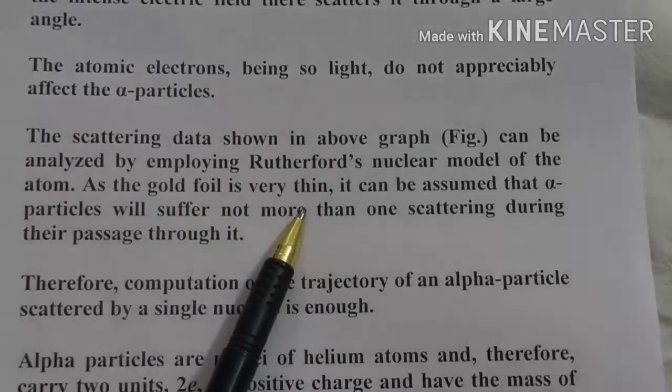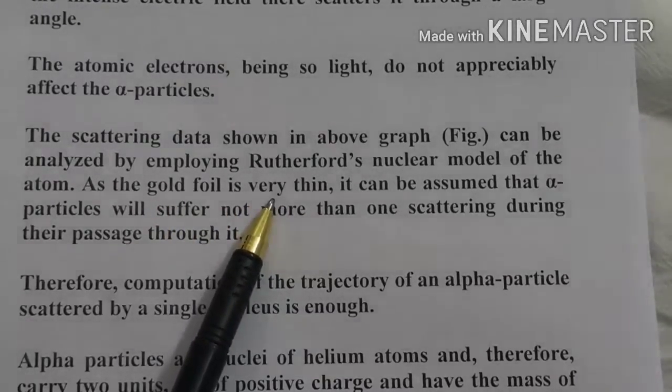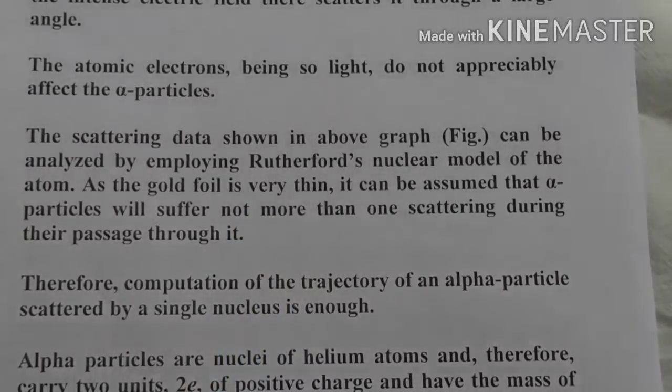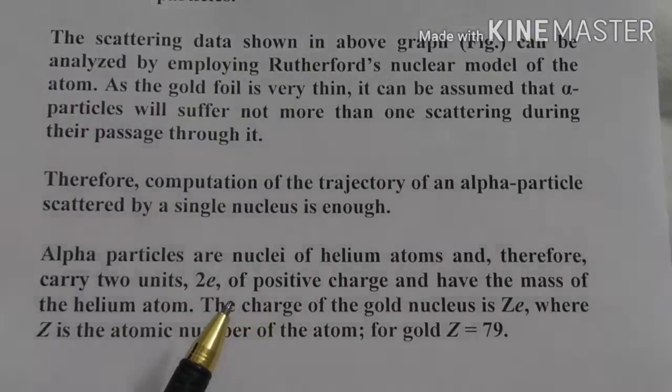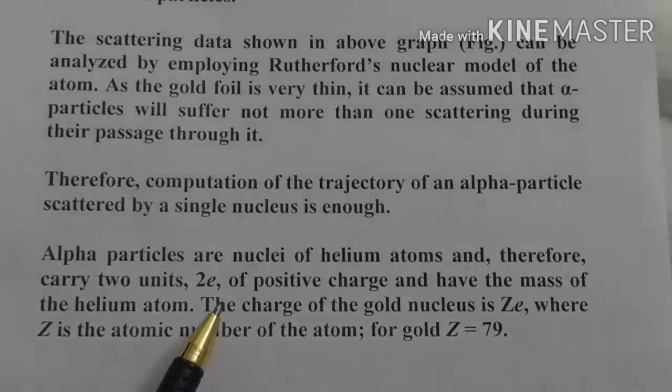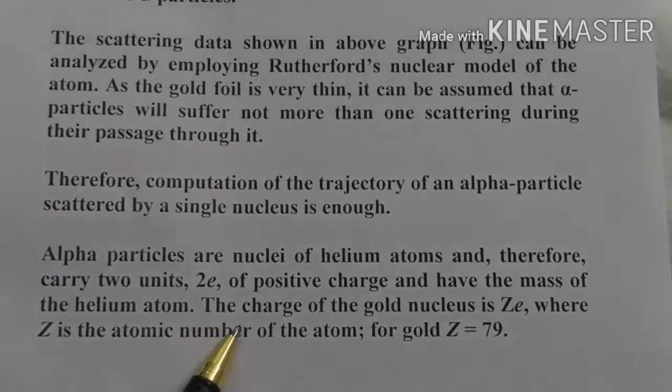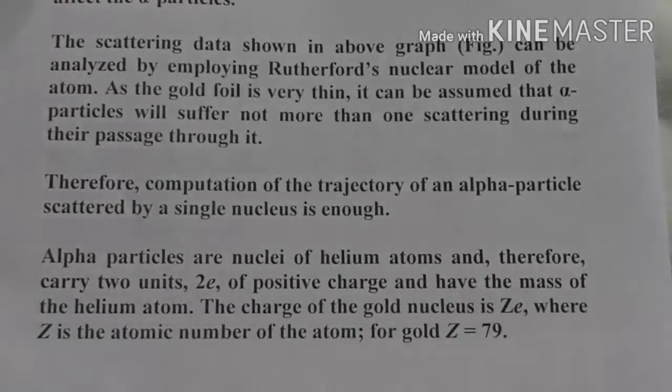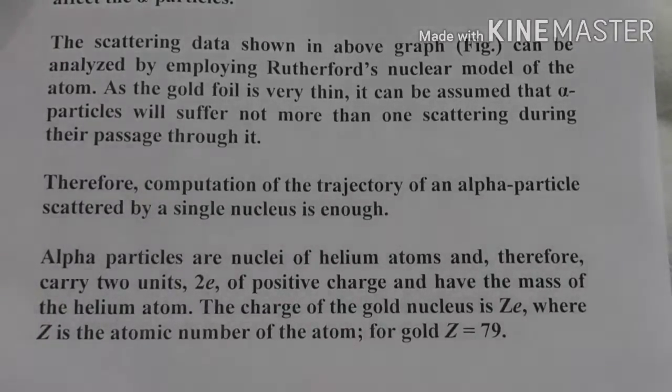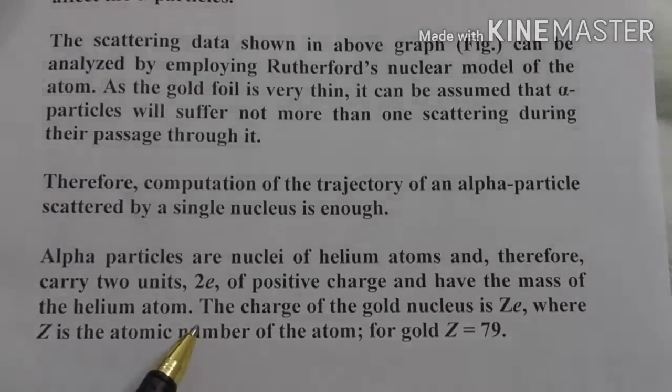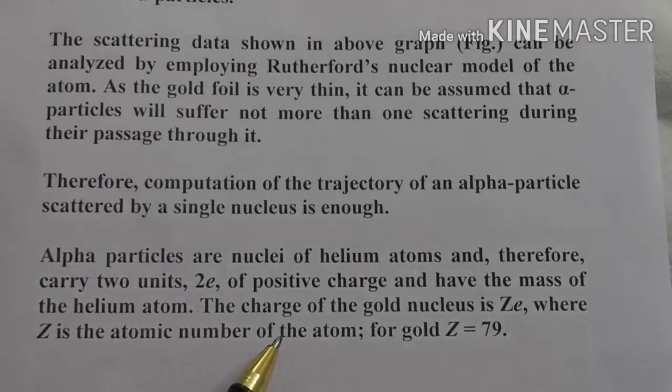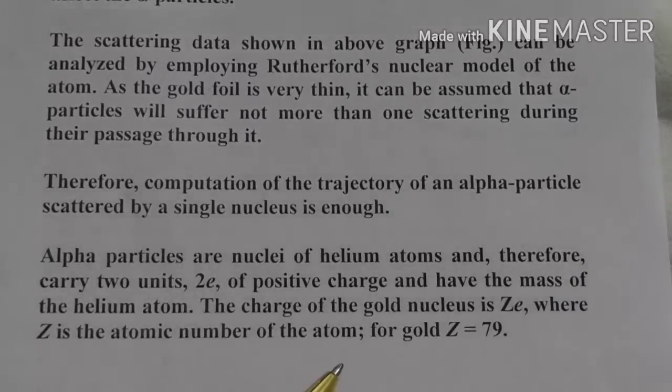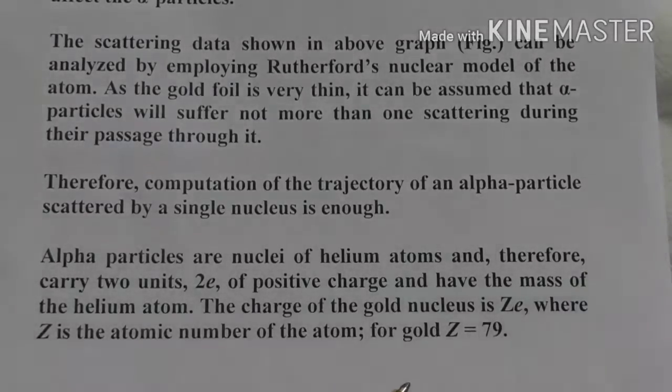Now, alpha particle is the nucleus of helium atom. Helium atom is 2He4. We have 2 protons, 2 neutrons, and 2 electrons. Because we are discussing nucleus, 2 protons in the nucleus means charge is 2e. Neutron has no charge. So here nucleus is having 2e charge. And what about the charge of gold nucleus?